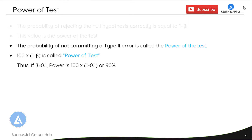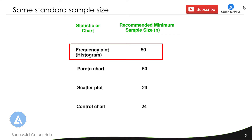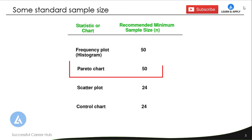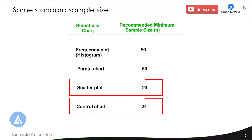Before demonstrating the relationship between power and sample size with a practical example, let's understand the general guidelines for sample sizes. For a histogram — also called a frequency distribution diagram — we must have at least a sample size of 50 for meaningful conclusions. Similarly, for a Pareto chart, at least 50 samples are recommended. For a scatter plot or control chart, we should have at least 24 samples for effective conclusions. We can plot charts with fewer samples, but the results will not be reliable.